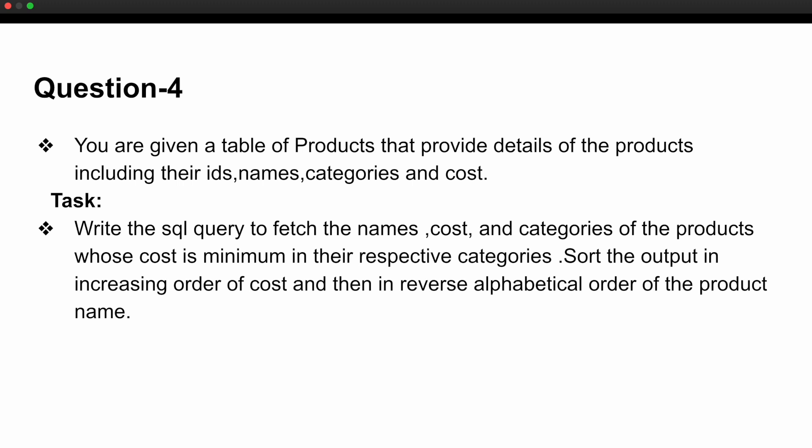The fourth question was a database question. You are given a products table containing product IDs, names, categories, and cost. The task is to write an SQL query to fetch the names, cost, and categories of products whose cost is minimum in their respective categories. Then sort the output in increasing order of cost and in reverse alphabetical order of the product name.